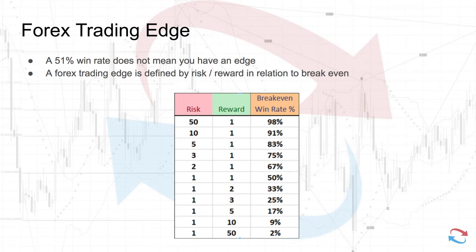It's not our fault when it comes to wanting high win rates, because as we've grown up we've been told that success is getting high marks. In school, to get good grades you need 80, 90, or 100 percent. We've grown up with that concept, but in trading it doesn't actually apply — and I'm going to show you why.